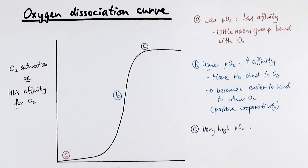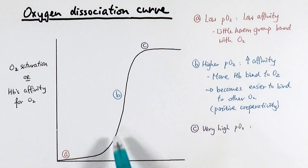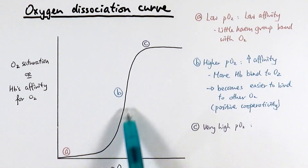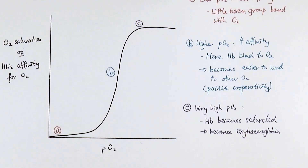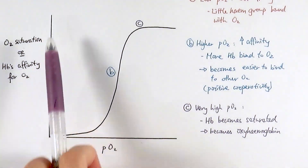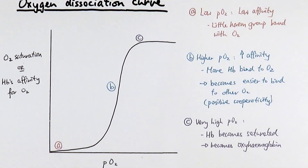As we increase the partial pressure of oxygen, more hemoglobin is actually binding the oxygen. Because hemoglobin exhibits positive cooperativity, it will bind to more oxygen even more easily. Therefore, you can see a massive increase in oxygen saturation for the hemoglobin — the hemoglobin has an exponential increase in affinity for oxygen, wanting to bind to more oxygen in a very short amount of time. When it reaches very high partial pressure, all of the heme groups are now bound to oxygen. The hemoglobin becomes saturated and we call it oxyhemoglobin, reaching 100% saturation.